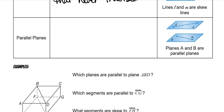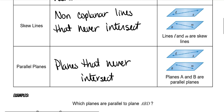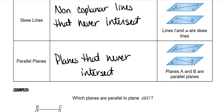Parallel planes are planes that never intersect. This picture is the same as above, but this time we want to pay attention to the planes themselves. One is directly above the other and they will never intersect, so they are parallel planes.